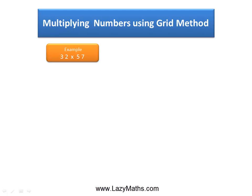Here's an example of multiplying numbers using a grid method: 32 times 57.